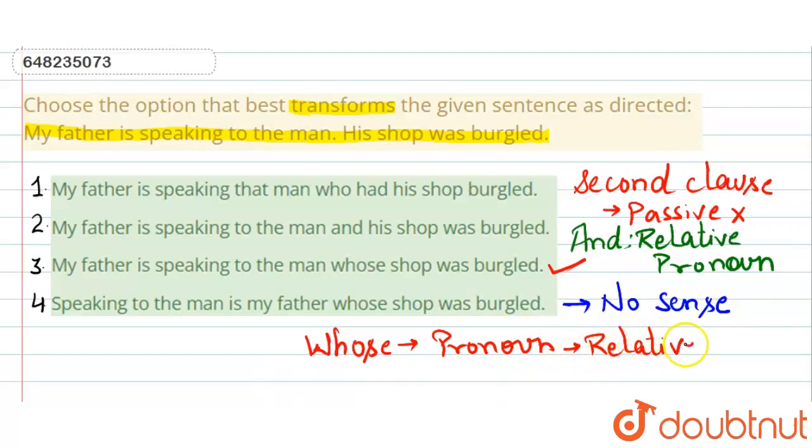Okay? So relative pronouns. Whose is used to show possession. So here there is possession of whose shop was burgled, whose shop is burgled. So this shop is burgled, who is connected, whose possession is showing us, so whose will be used here, so option 3 will be the answer.